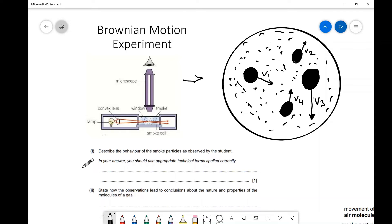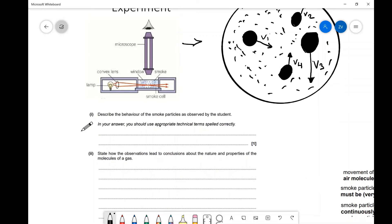Let's also look at a past paper question because this is a very typical past paper question. The first one is to describe the behavior of the smoke particles as observed by a student. The best way that we could describe these is with the word random motion.